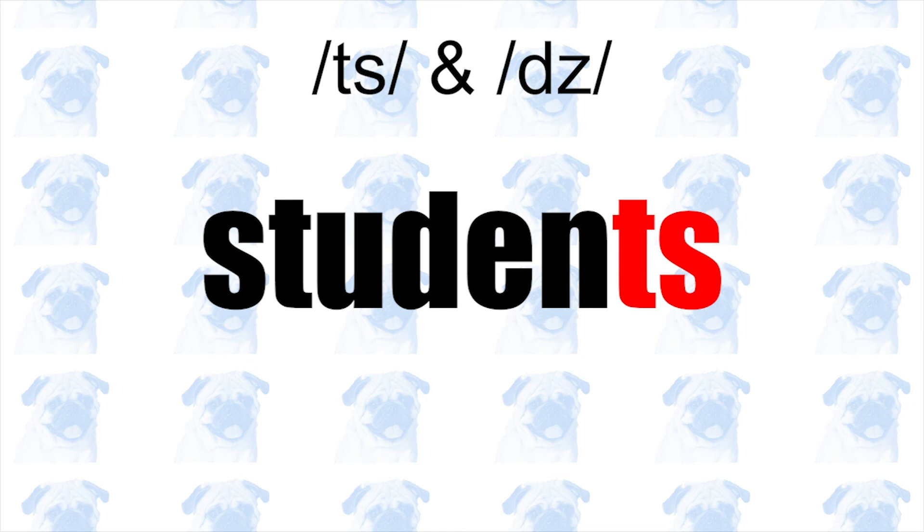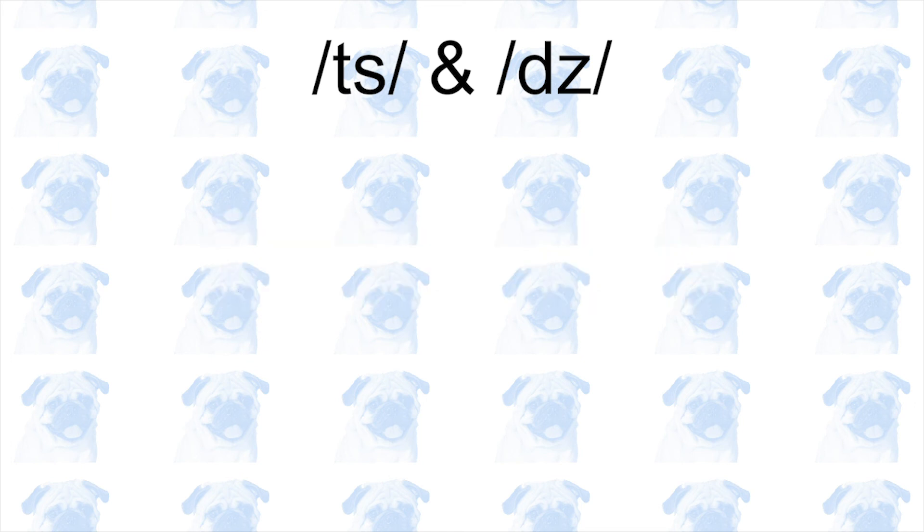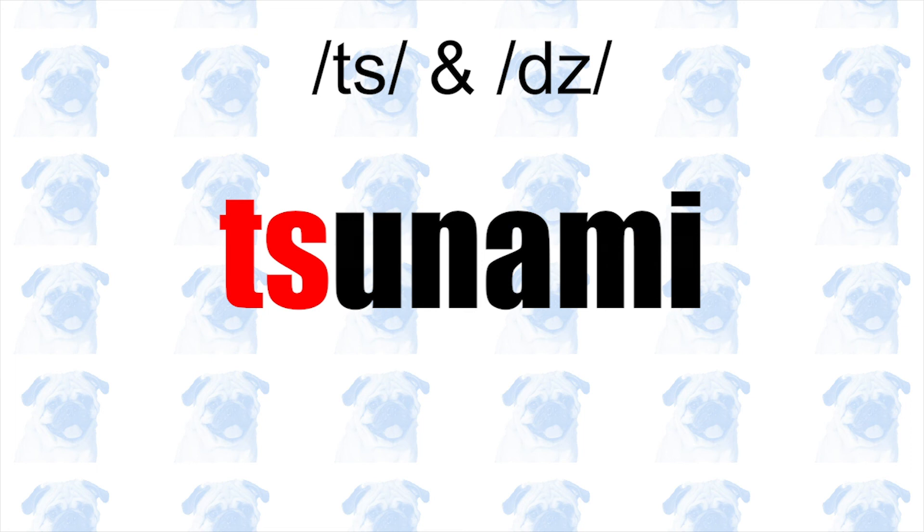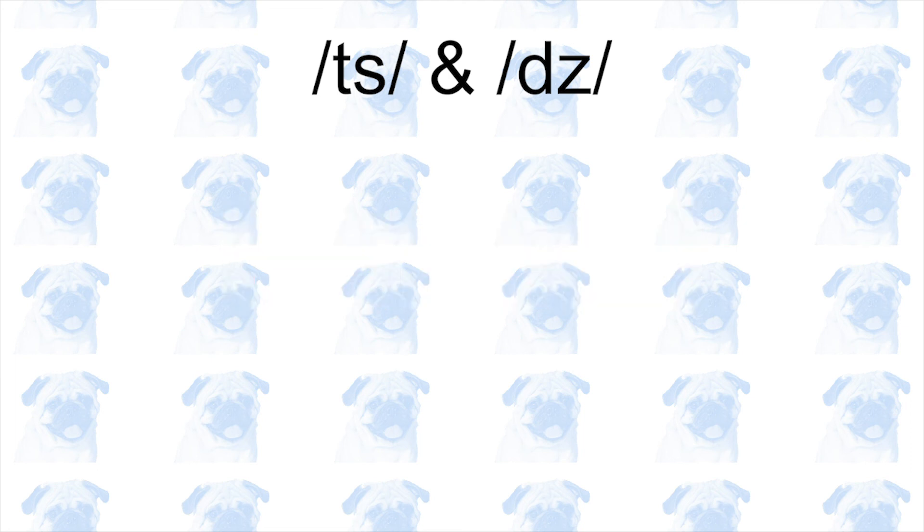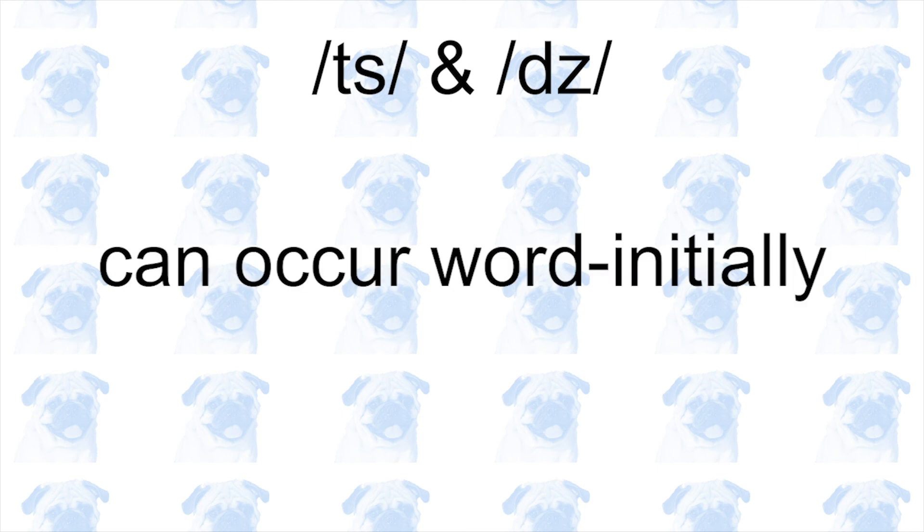In English, this pair of affricates usually occur only in the word final position, as in students. Some loan words deviate from this pattern, such as the Japanese loan word TSUNAMI, TSUNAMI. From this example, you can infer that these affricates also exist in Japanese, but in Japanese, they can occur word initially.